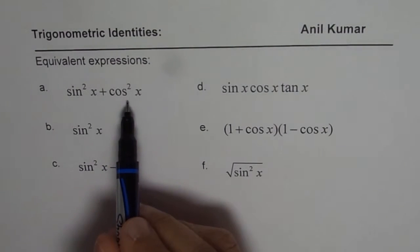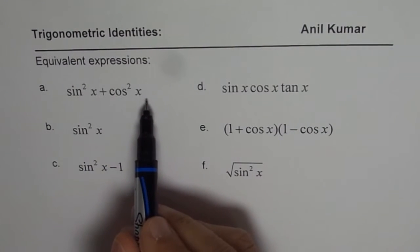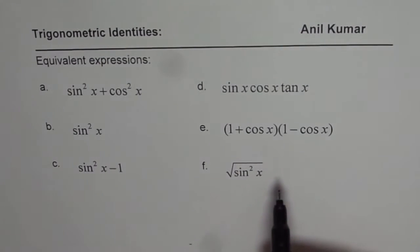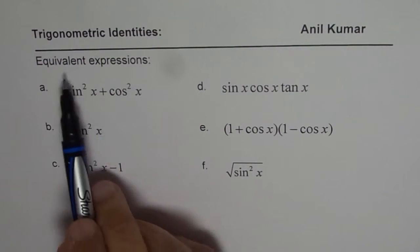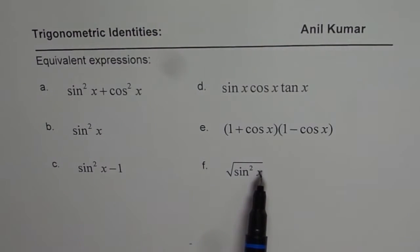Sine square x plus cos square x. Can you write this as another trigonometric ratio? That is what you need to do. So that is what we mean by saying, write equivalent expressions for the given expressions. So these six questions are for you. You can copy, answer and then look into my suggestions.